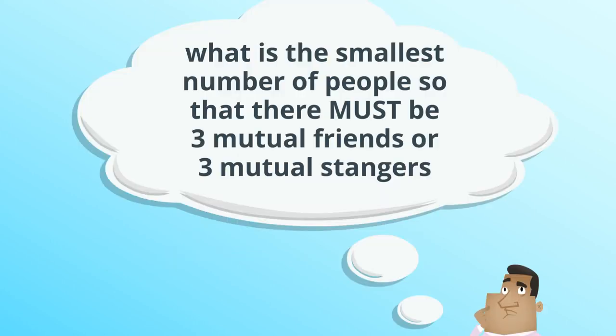Now, the question that we ask for this introduction to Ramsey theory is this. What is the smallest number of people so that there must be three mutual friends or three mutual strangers? So let's just take a second to think about this question. The first thing is we've put here, or. That's the mathematical or. It does include having both. So you can have both if you want.